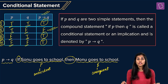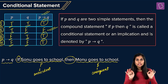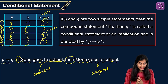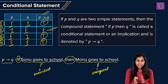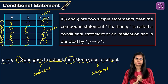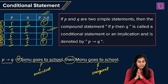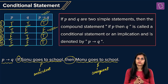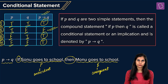The conclusion is that the conditional statement P implies Q is false only when the antecedent is true but the consequent is false. In any other scenario, the conditional statement will always hold to be true.